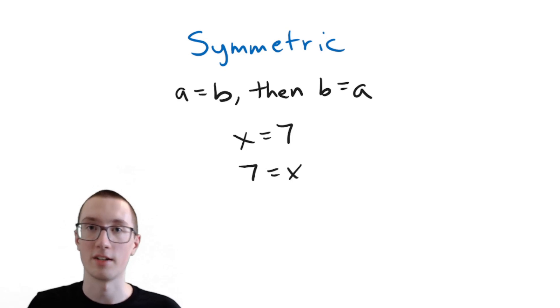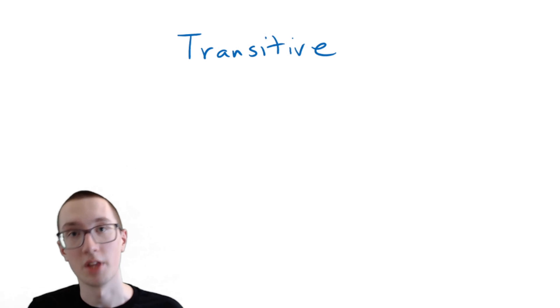Well, the symmetric property tells us that we can also write this as 7 equals X. It doesn't matter which side of the equal sign each one is on. It's just saying that they're equal. So in this case, both of these equations are correct.